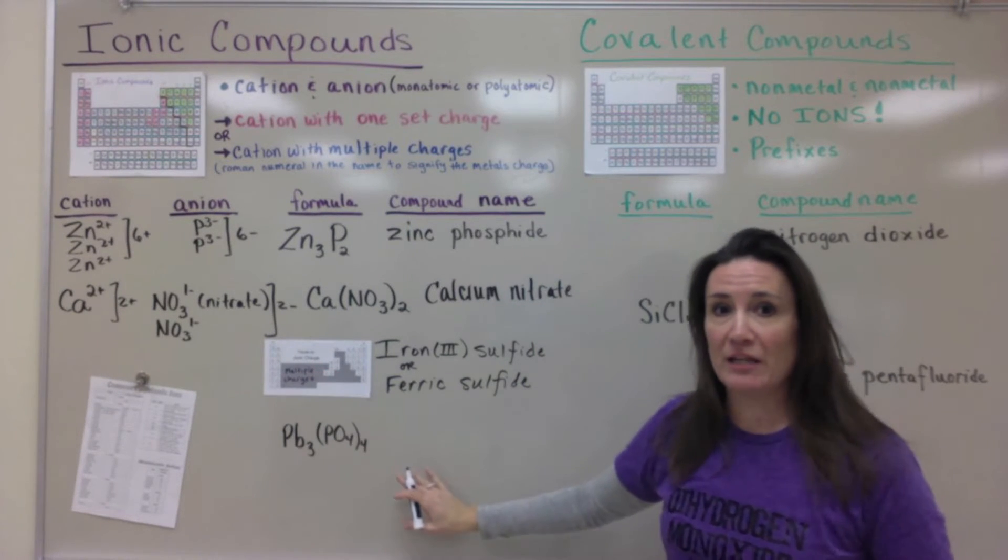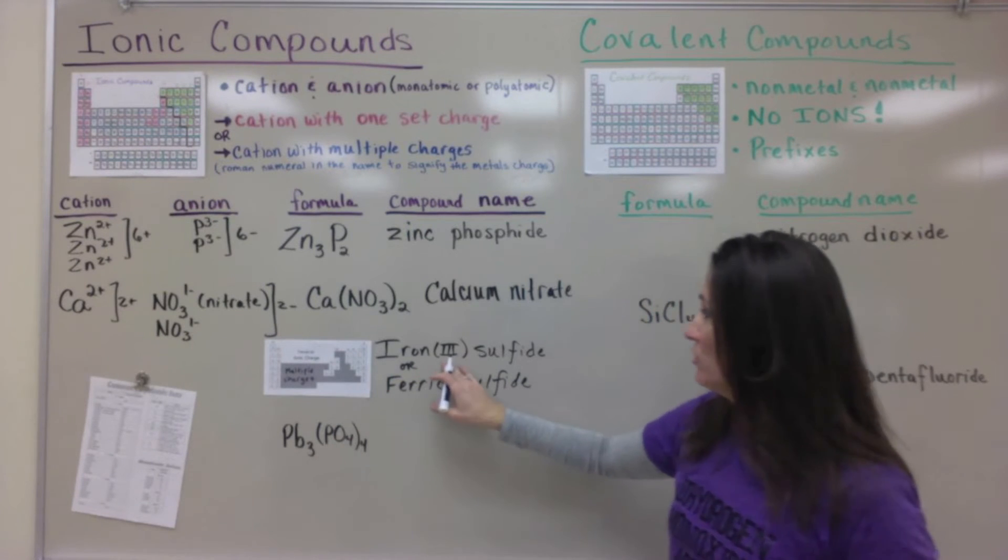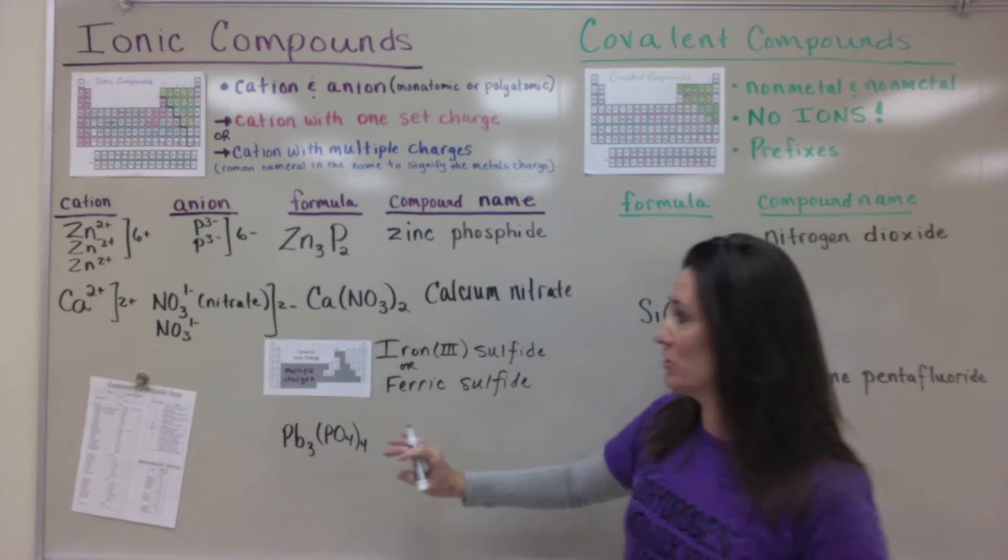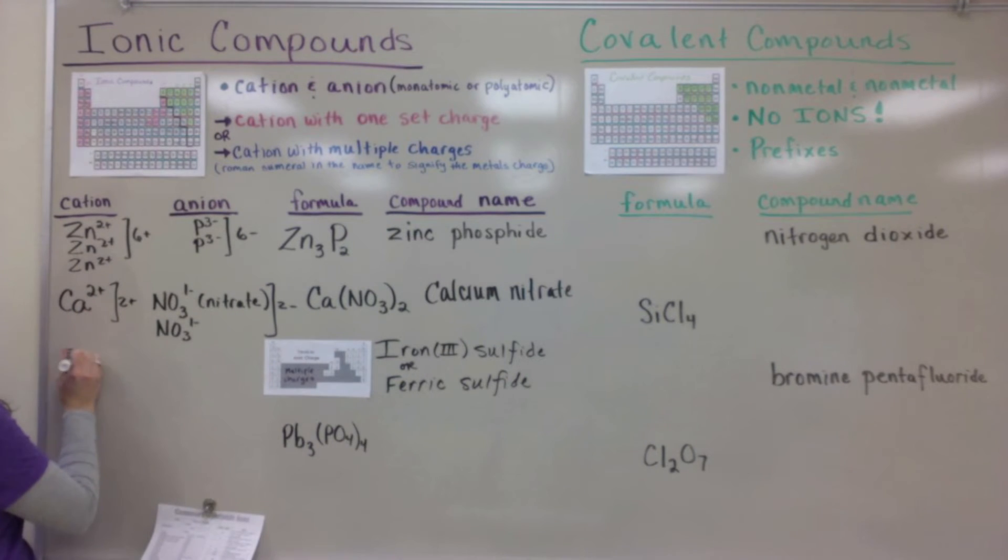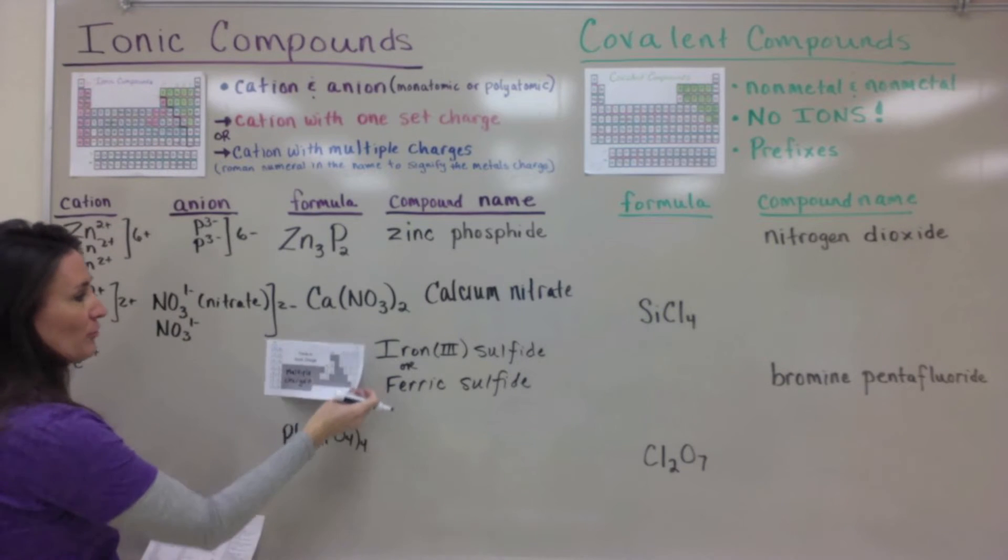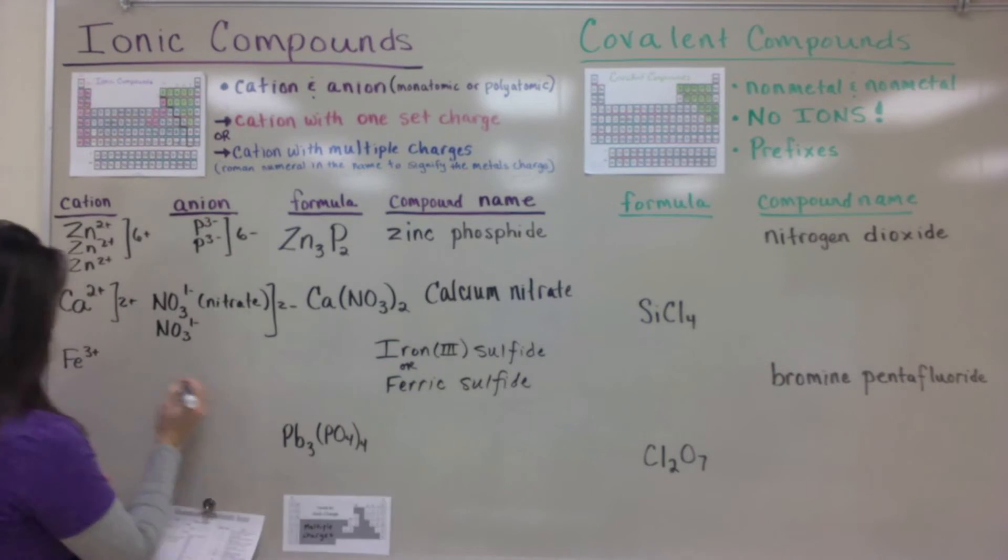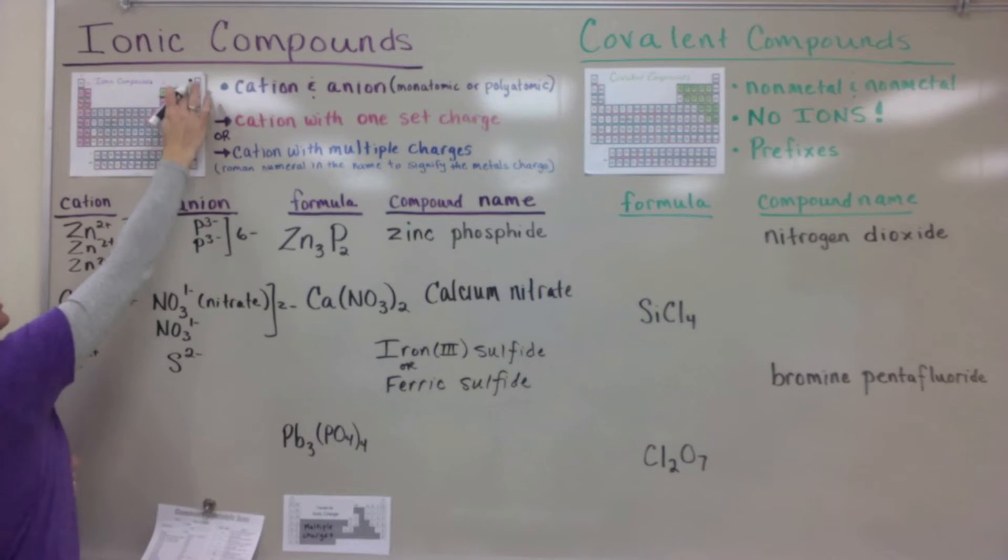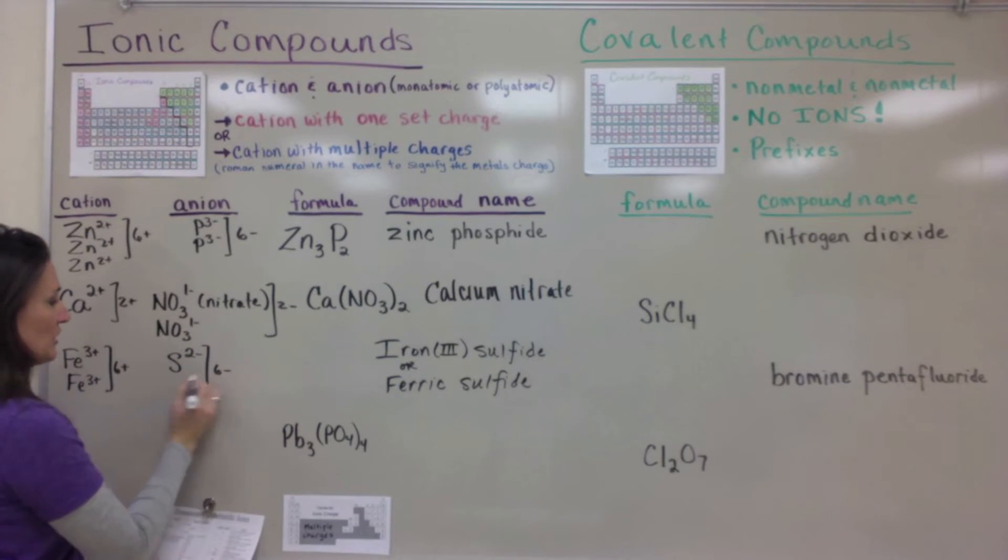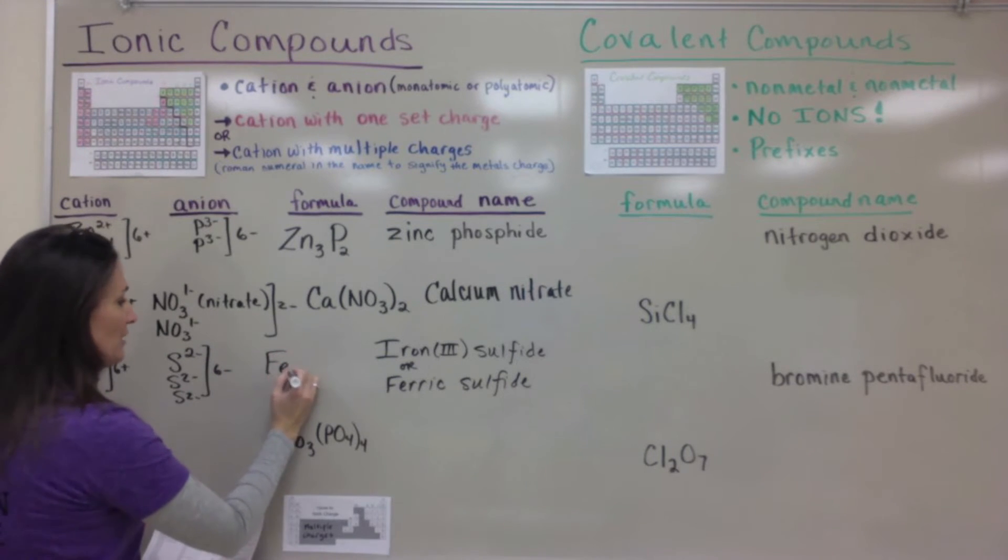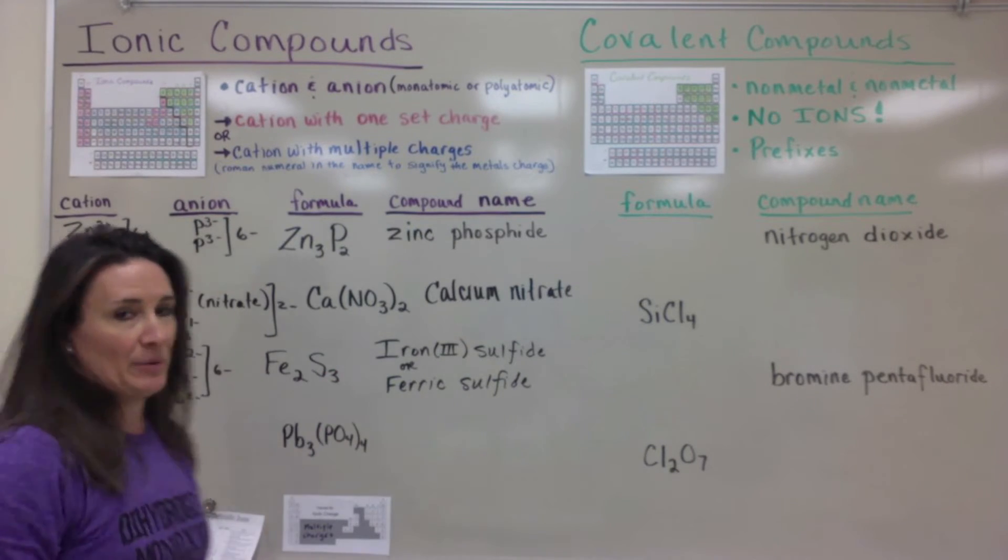However when we get to iron and then the next one PB which is lead you will need to use roman numerals or the Latin name to denote which one you have. Transition metals are the most common ones that have two charges. In this case we're saying that we have iron 3+ and then the sulfide is off the periodic table which has a predicted 2-. Very similar to our first example except for the cations are 6+ and the anions are 6- but there are three sulfides and two iron. You do not need parentheses so you say two iron and three sulfides because they're not polyatomic.